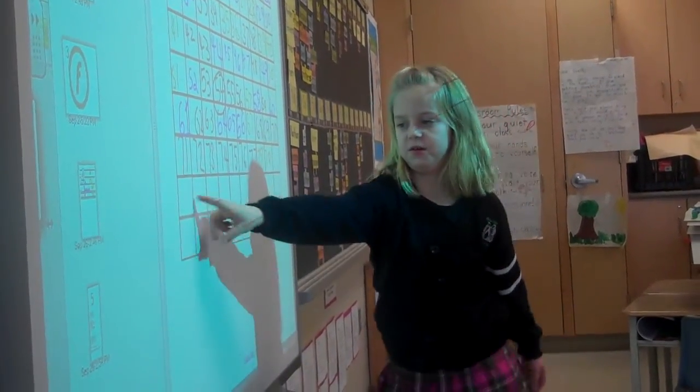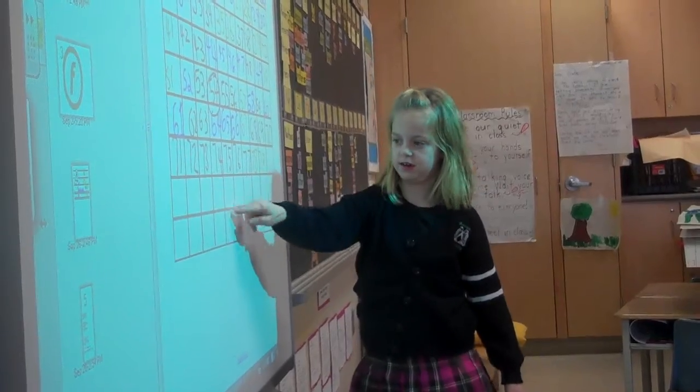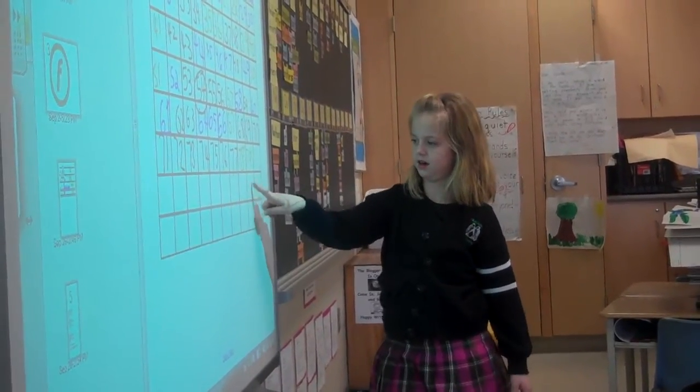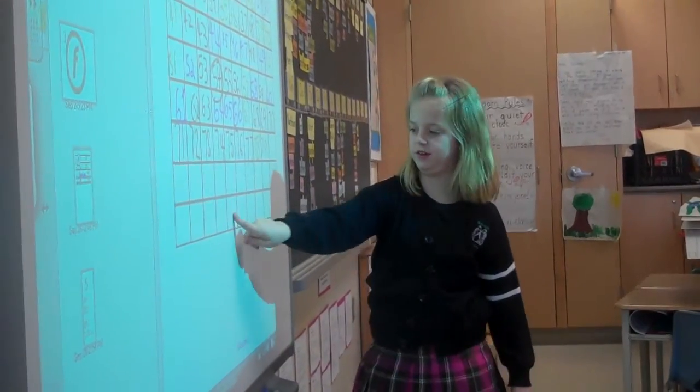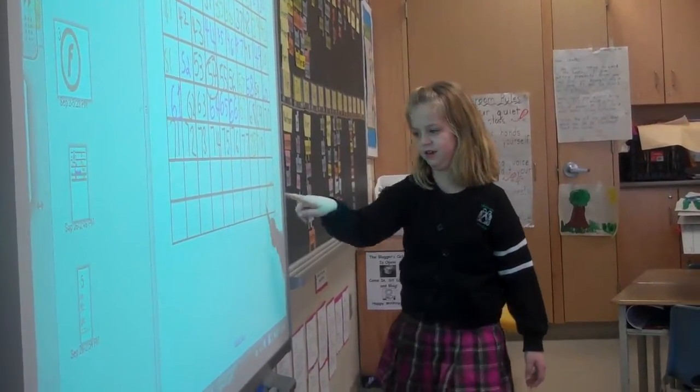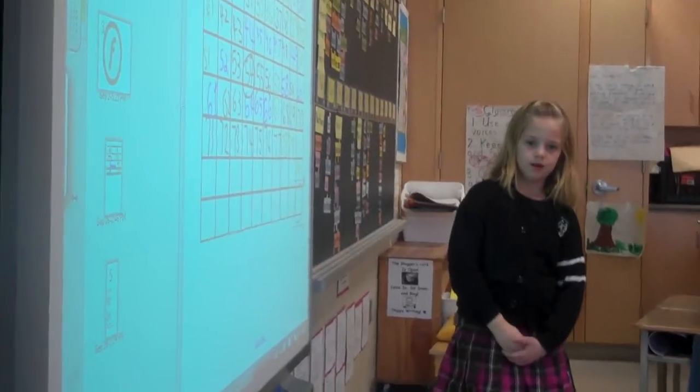And then I counted 1, 2, 3, 4, 5, 6, 7, 8, 9, 10, 11, 12, 13, 14, 15, 16, 17, 18, 19, 20, 21. Okay, so how many days until the 100th day? 21.